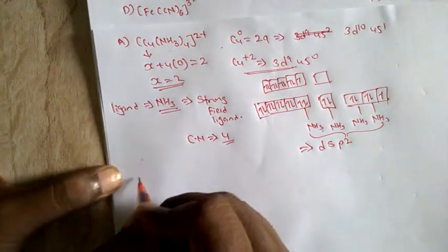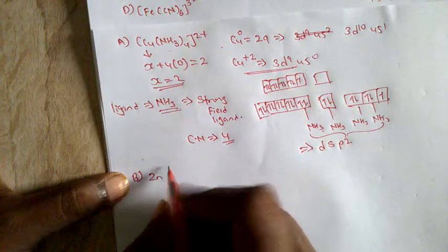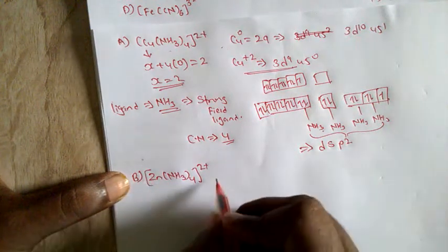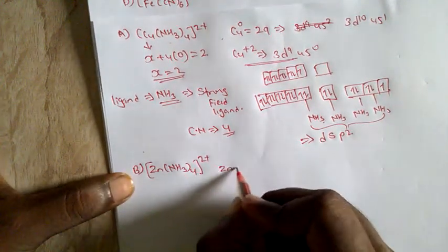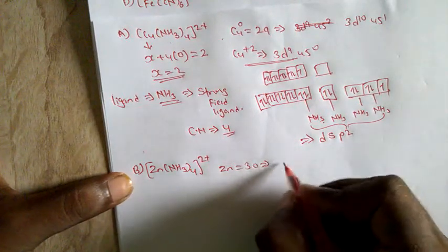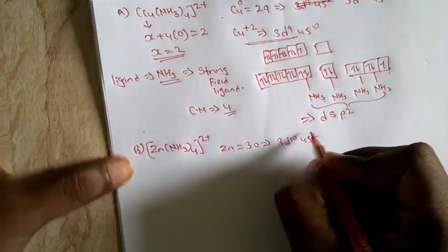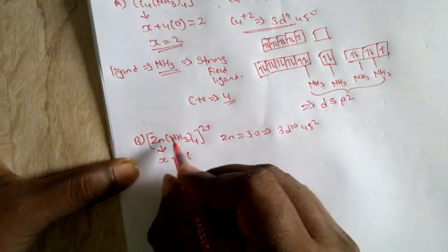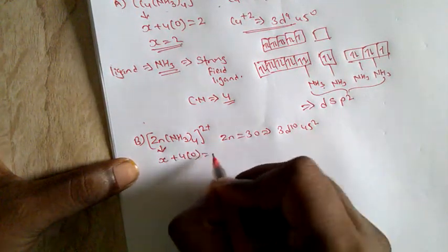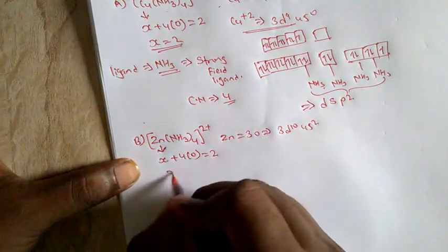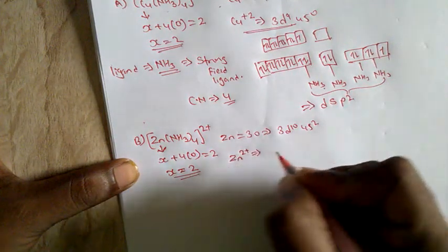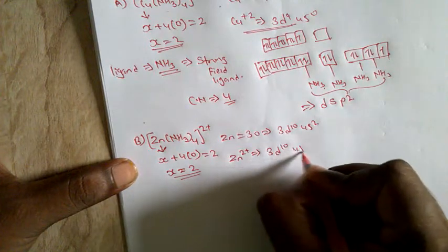Taking the second complex: [Zn(NH₃)₄]²⁺. Zinc's atomic number is 30, electronic configuration 3d¹⁰ 4s². Finding the oxidation state of zinc: consider X plus four times ammonia (oxidation state zero) equals the charge of the complex, which is 2+. So X equals 2. Zinc is in the +2 oxidation state. The electronic configuration becomes 3d¹⁰ 4s⁰.